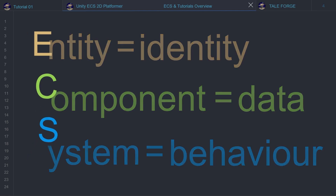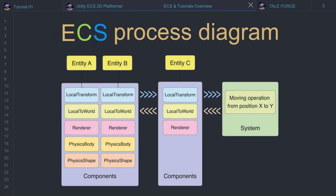To visualize the process, take a look at the diagram. The system reads the local transfer components. Based on the logic contained in the system, it updates the local to world components, for example, moving from position X to Y. The system performs operations on all local transfers. The fact that entities A and B have in addition physics body and physics shape components has no effect on the system. However, you can configure the system by matching queries to require a specific component, for example physics body, or alternately, to exclude entities with physics body components.